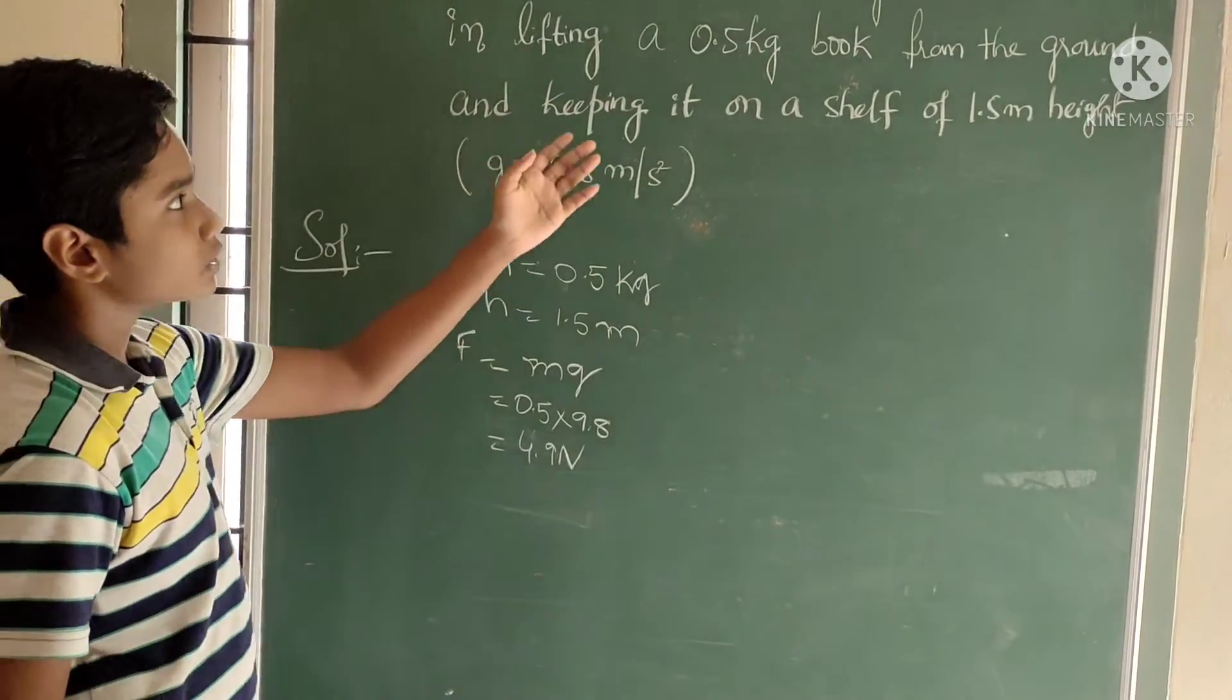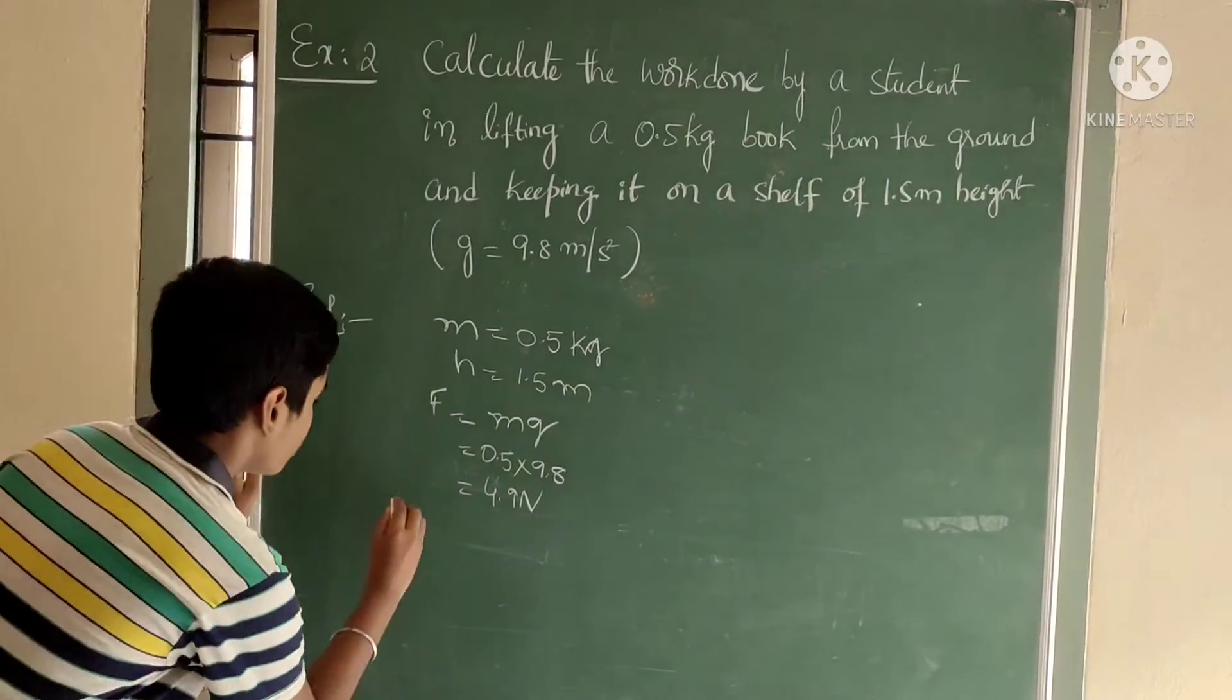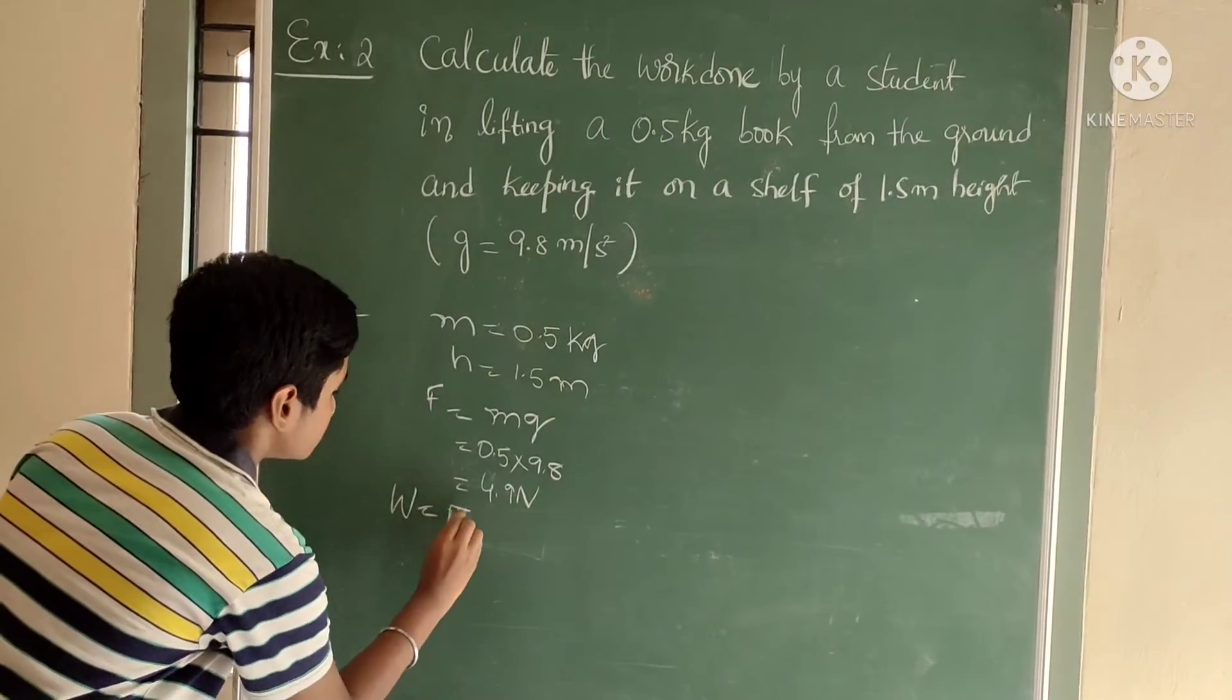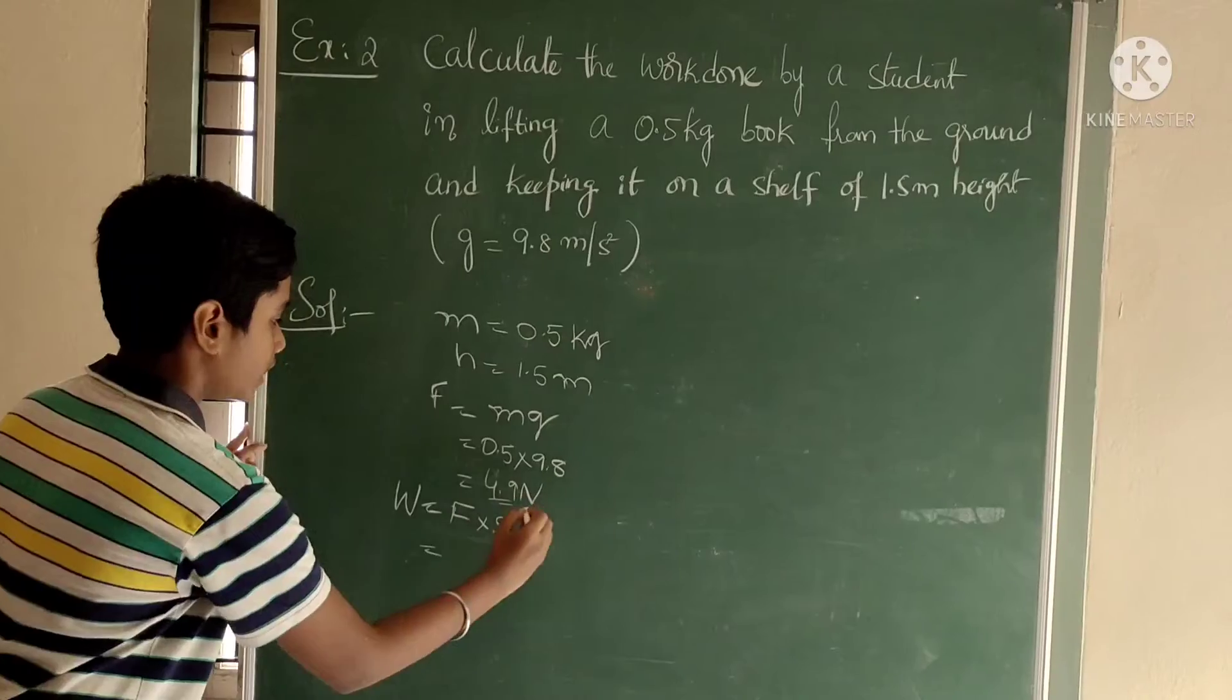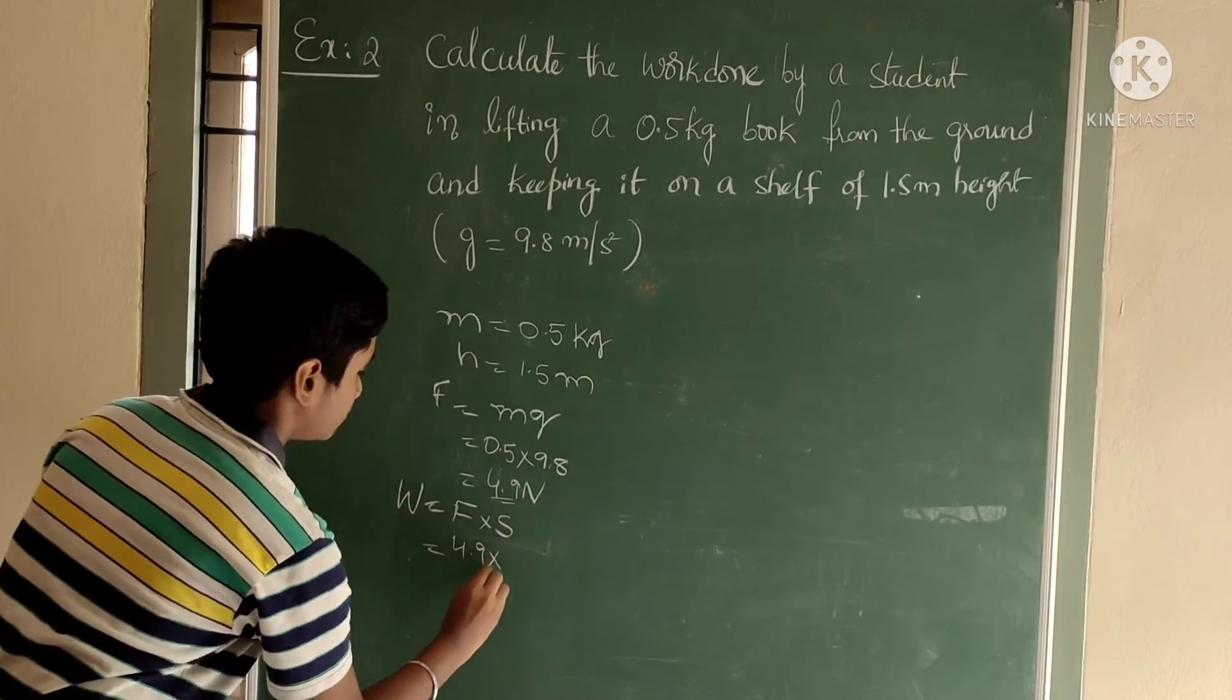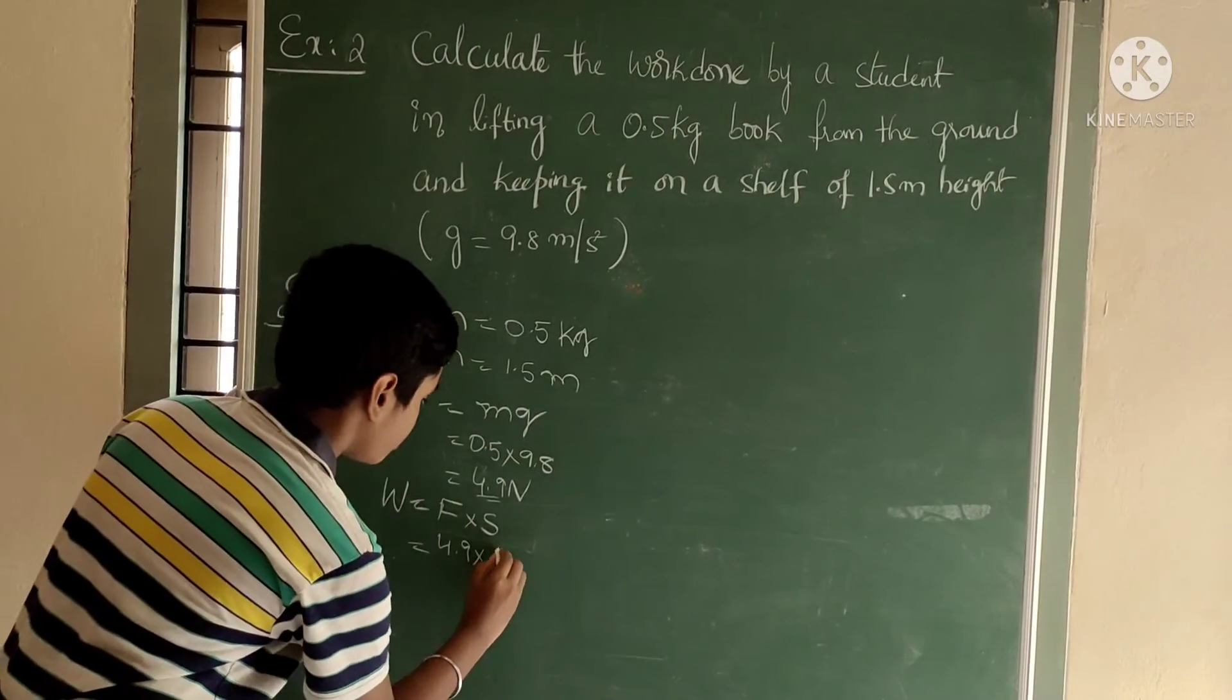Here he asked to find the work done. Calculate the work done by the student he asked. Therefore, work done W is equal to F into S. We know the formula. F we got 4.9 newtons, 4.9 into S we know 1.5.